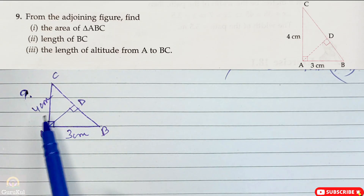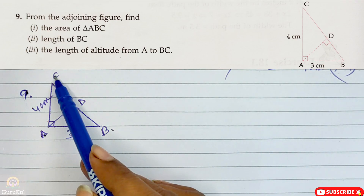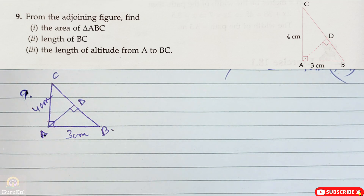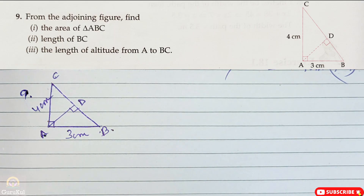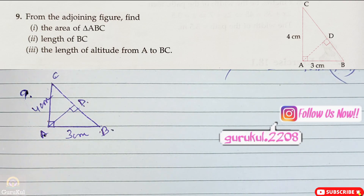As you can see on the screen, a triangle is drawn. From this figure, we need to find the area of triangle ABC. Secondly, we need to find the length of BC. And thirdly, we need to find the length of the altitude from A to BC. So these are the 3 requirements in this question.